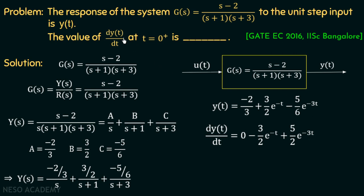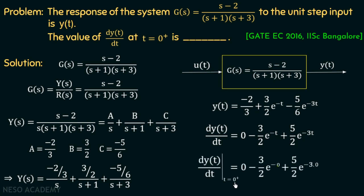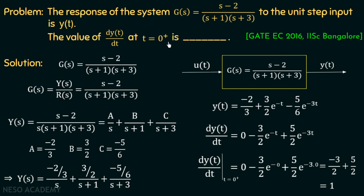To find dy/dt at t=0+, we substitute t=0: dy/dt = -(3/2)e^0 + (5/2)e^0 = -3/2 + 5/2 = 1. So the value of dy/dt at t equal to 0+ is equal to 1.